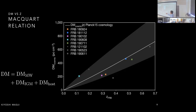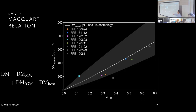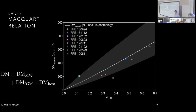This is the Macquart relation, named to pay homage to J.P. Macquart, who published this in 2019 and died shortly thereafter. For the handful of fast radio bursts with host identifications and therefore optical redshifts, you get a fairly strong — if not perfect — correlation between DM and distance. There are now a few dozen more data points on this plot, but not dramatically more.